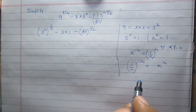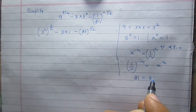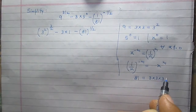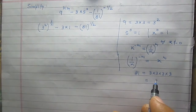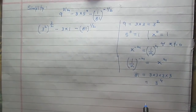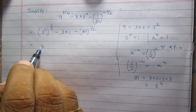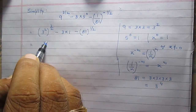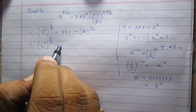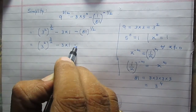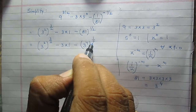81 can be written as 3 multiplied by 3 multiplied by 3 multiplied by 3, so 81 equals 3 raised to the power 4. We can rewrite the expression as 3 raised to the power 2, then raised to the power 3 by 2, minus 3 multiplied by 1, minus 3 raised to the power 4 and 1 by 2.